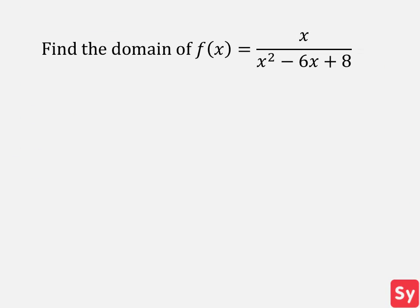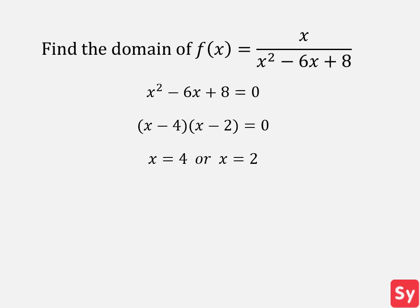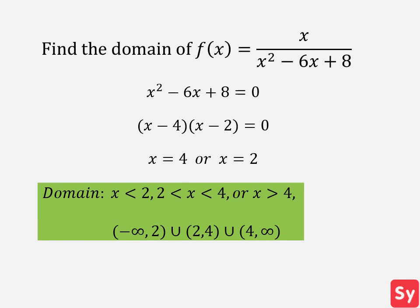Last example: we want to find the domain of x over x squared minus 6x plus 8. Since it is a rational function, we'll take the denominator and set it equal to zero. We can factor the quadratic to solve for x. We get x minus 4 times x minus 2 equals zero. Now we can solve for x — we get x equals 4 or x equals 2. That means whenever x equals 2 or x equals 4, the function is undefined, so our domain cannot include these values. Therefore, our domain is x is less than 2, x is between 2 and 4, or x is greater than 4.